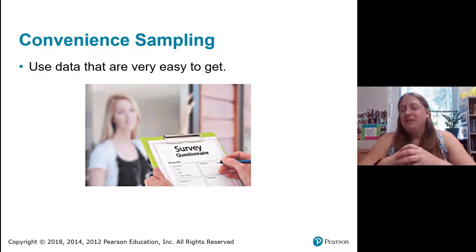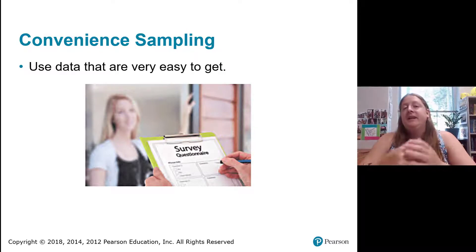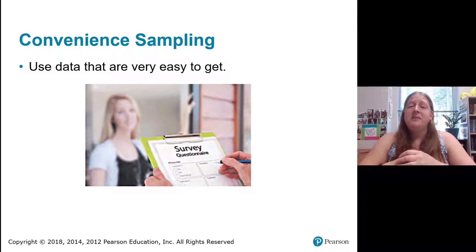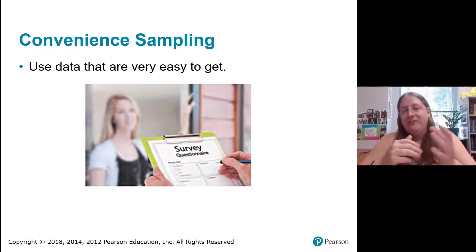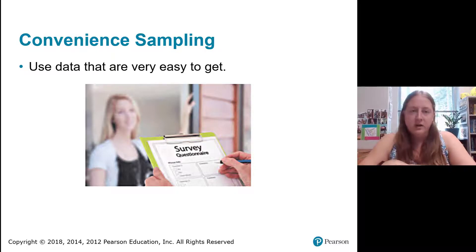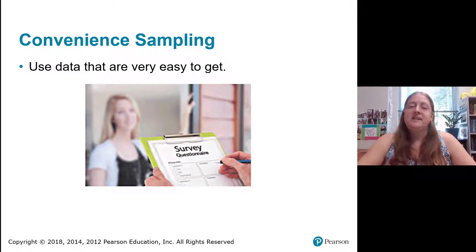Convenience sampling is very common. It's using data that are very easy to get — for example, wanting to find out how students feel about something and only talking to the students in your own classroom because they're right there in front of you. Doing the super convenient thing, the thing that's easiest to get data from, is called convenience sampling.